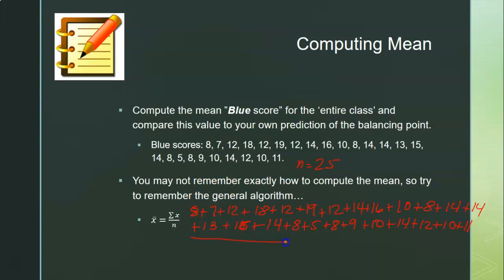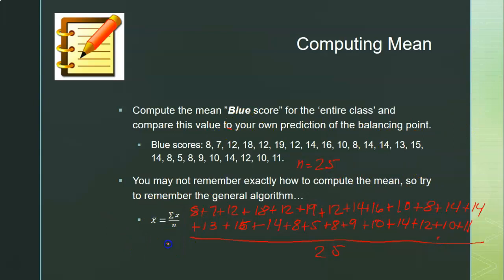So that's all these numbers added together — all 25 of them. Once I add all of those numbers together, I get 293 in the numerator divided by 25. When I do 293 divided by 25, I get 11.72. So my mean — my x-bar — is equal to 11.72. That right there is my balancing point.